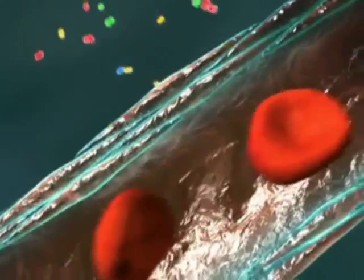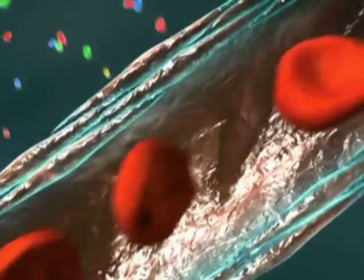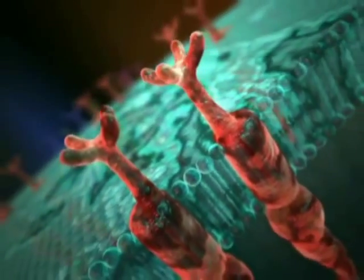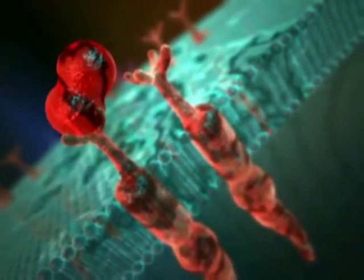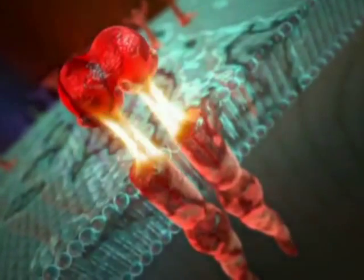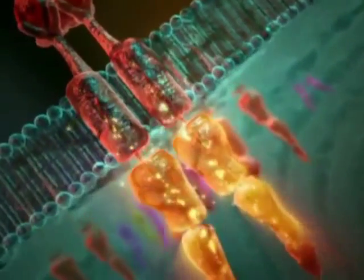VEGF binds to specific receptors located on the endothelial cells lining nearby blood vessels. VEGF binds to the extracellular portion of the VEGF receptor promoting receptor dimerization. This activates the receptor's intracellular tyrosine kinase domain, and autophosphorylation takes place.